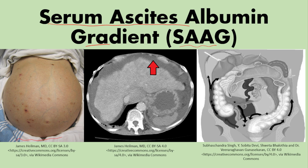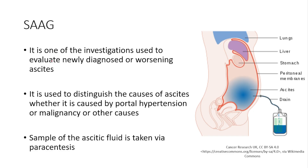The second picture shows a CT scan of a patient with ascites, and you can see the ascitic fluid is around the abdominal viscera. The third picture shows some arrows pointing towards the locations that the ascitic fluid goes to when it is formed in the abdomen. So let's start by defining the SAAG.